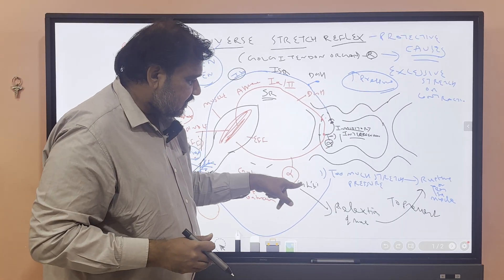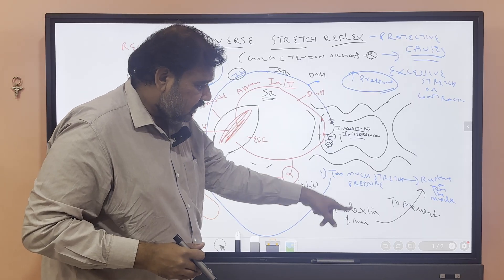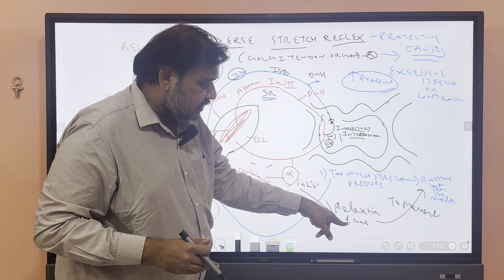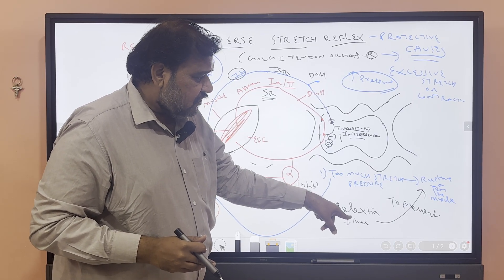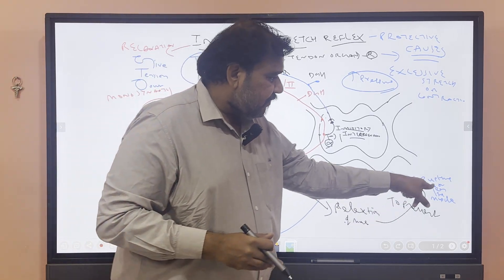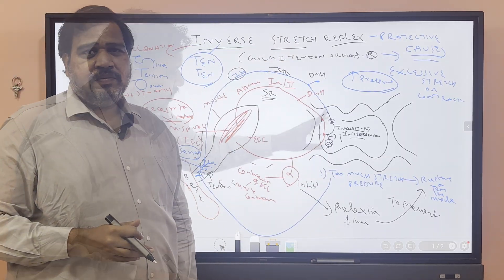When alpha is inhibited, contraction is inhibited and relaxation of the muscle takes place. This relaxation of the muscle prevents the rupture of the muscle.